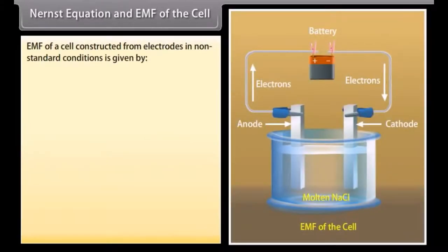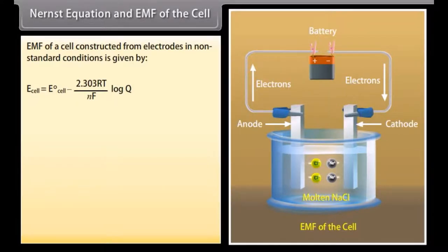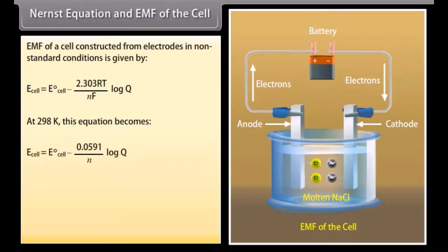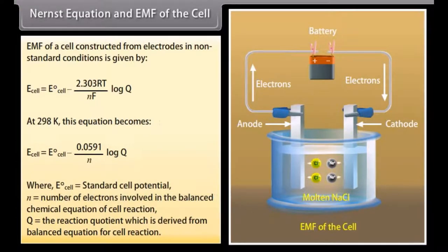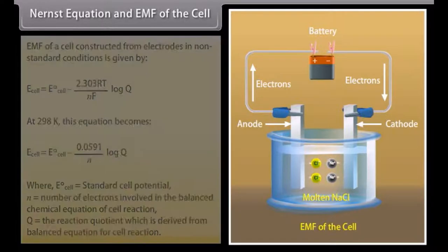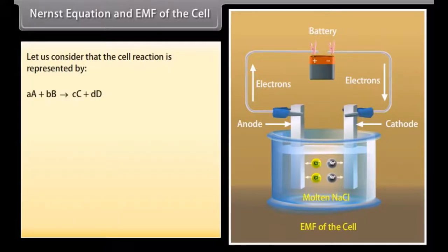Nernst equation and EMF of the cell. The EMF of a cell constructed from electrodes in non-standard conditions is given by: E(cell) = E°(cell) − (2.303RT/NF) × log Q. At 298 K, this equation becomes: E(cell) = E°(cell) − (0.0591/N) × log Q, where E°(cell) = standard cell potential, N = number of electrons involved in the balanced chemical equation of the cell reaction, and Q = the reaction quotient derived from the balanced equation. Consider the cell reaction: aA + bB → cC + dD.